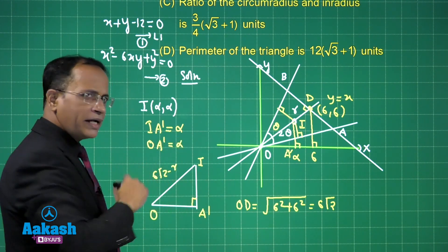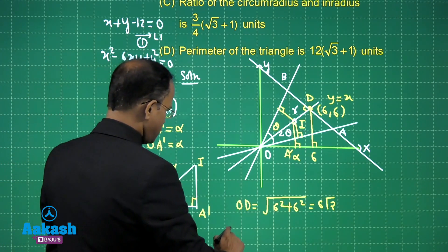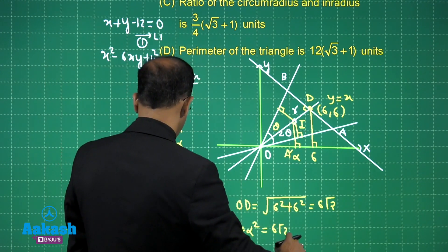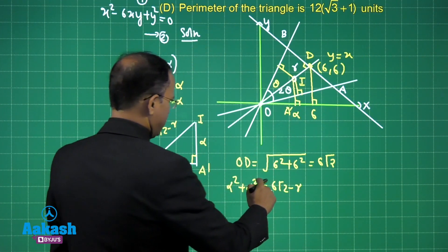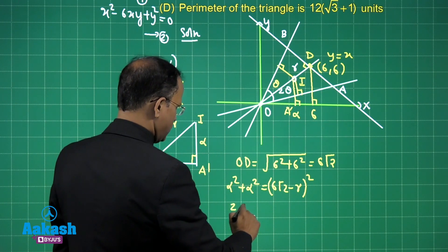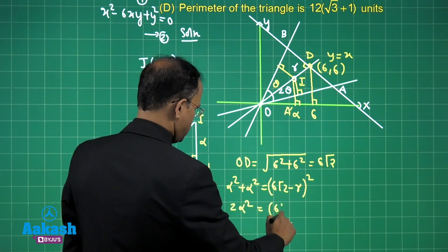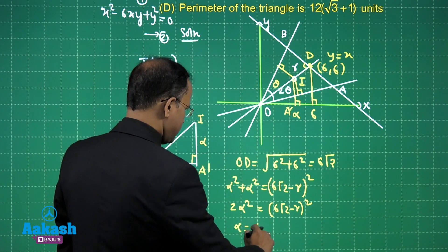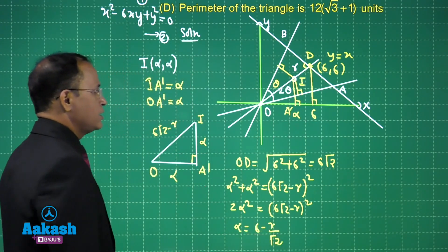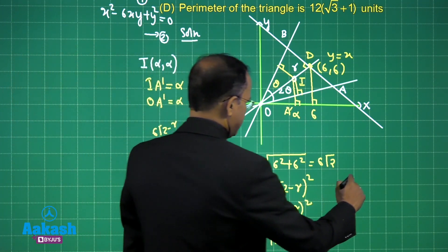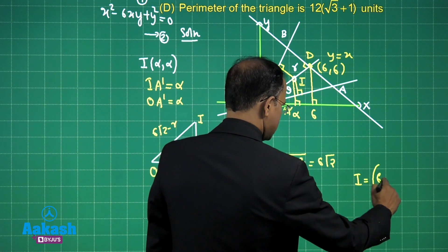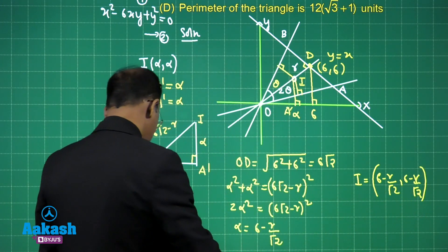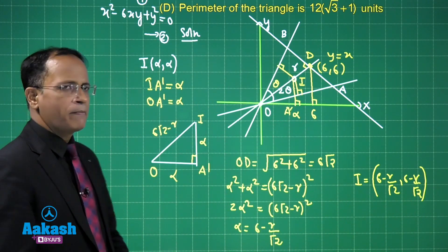Applying Pythagoras' theorem: α² + α² = (6√2 − r)². This gives 2α² = (6√2 − r)², so α = (6 − r)/√2. Therefore the incenter coordinates are ((6 − r)/√2, (6 − r)/√2). This is a very interesting calculation.